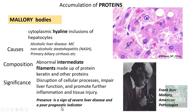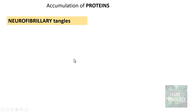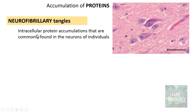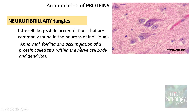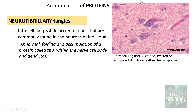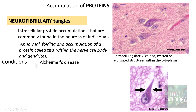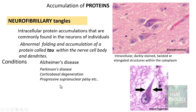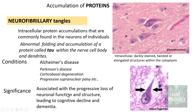The fourth accumulation is neurofibrillary tangles. These are intracellular protein accumulations commonly found in neurons, particularly in Alzheimer's disease. They result from abnormal folding and accumulation of tau protein, which is normally a microtubule-associated protein. They appear as intracellular, darkly stained, twisted or elongated structures within the cytoplasm. Associated conditions include Alzheimer's disease, Parkinson's disease, corticobasal degeneration, and progressive supranuclear palsy. These tangles cause progressive loss of neuronal function and structure, leading to cognitive decline and dementia.